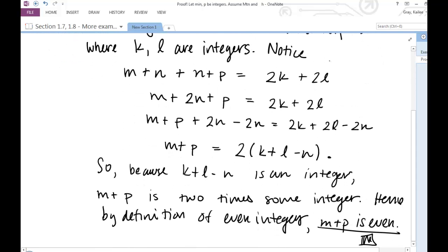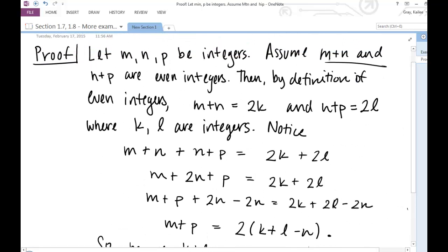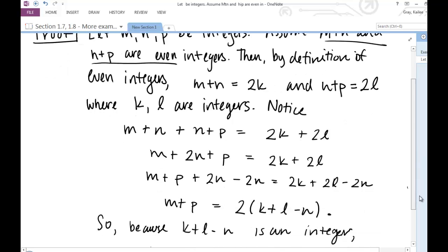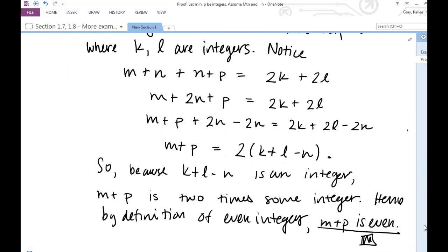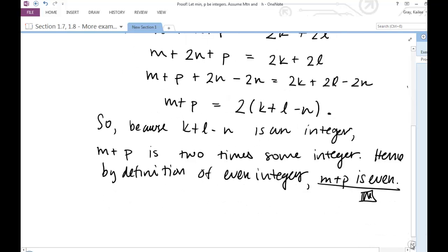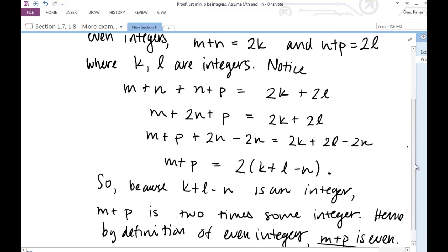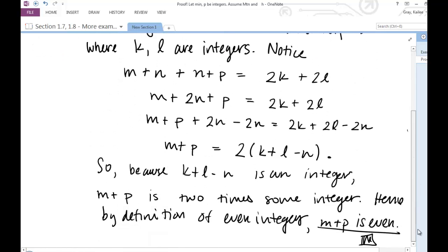Our hypothesis was that m plus n and n plus p are even integers. So, someone who's reading this proof should be able to identify that hypothesis and conclusion. You could take it one step further and restate what you were trying to prove, just restate the original statement, but this is enough. As long as your hypothesis and conclusion is clear, then you've done what you need to do. So, I hope this helps. Let me know how you proved it. Did you find a different way? There's different ways. This isn't the only way. Talk soon.